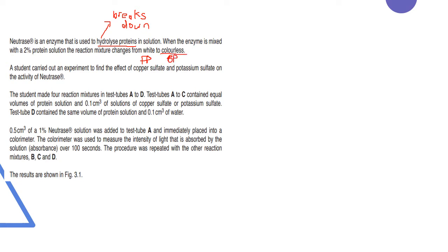It says a student carried out an experiment to find the effect of copper sulfate and potassium sulfate on the activity of Neutralase. They're trying to check if these act as inhibitors or enhancers. A student made four reaction mixtures in test tubes A to D. Test tubes A to C contained equal volumes of protein solution and 0.1 cubic centimeter of copper sulfate and potassium sulfate solutions. Test tube D contains the same volume of protein solution and water. This means D is your control.